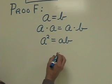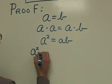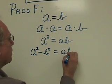We have a squared equals ab. I'm going to subtract b squared from the left side and b squared from the right side.